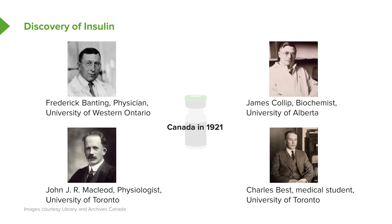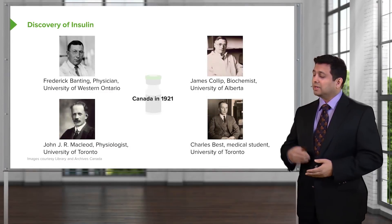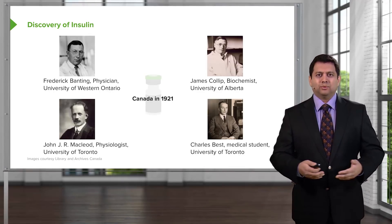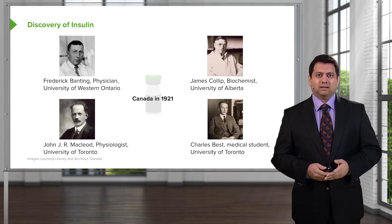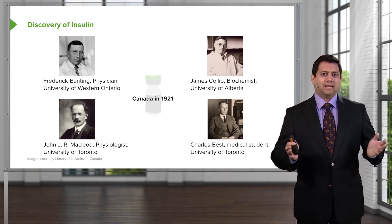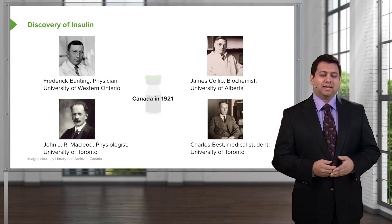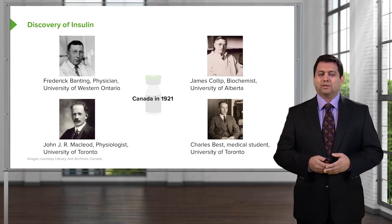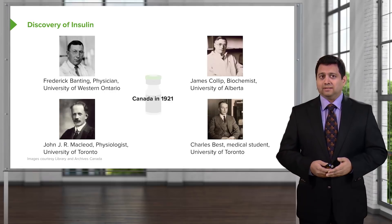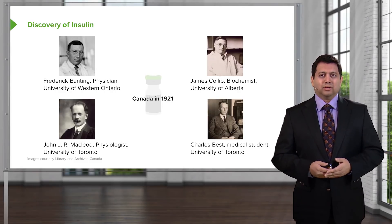Charles Best lost the lottery in terms of which research project he was going to be working for. When he found out that he was going to be working for Frederick Banting in the summer of 1921, he actually tried to give away his research clerkship to somebody else. That other medical student ended up taking a more popular position, relegating him to the ranks of people we don't know anything about. Charles Best then said, okay, I'll work with this guy — we know that he's kind of mean and mean-spirited, but I'll work with him. Together, they isolated insulin and revolutionized the way we look at diabetes.